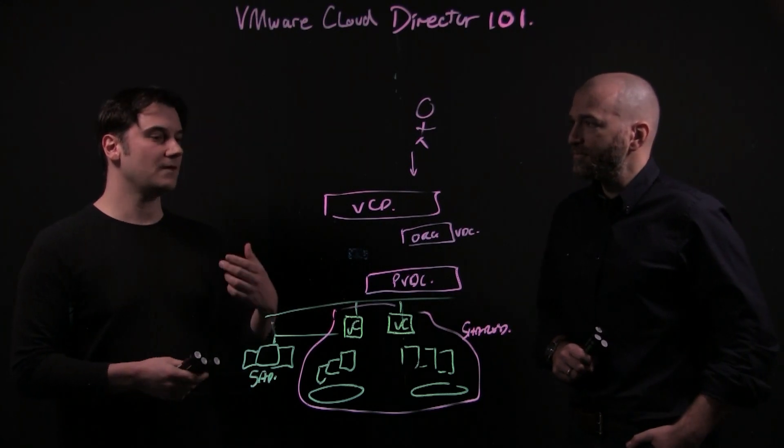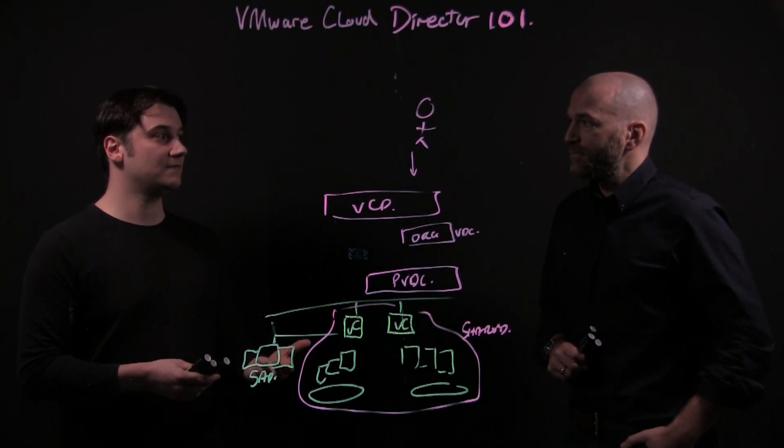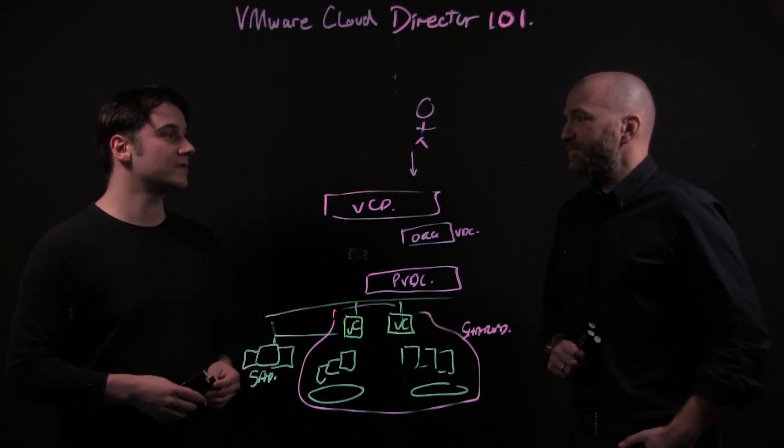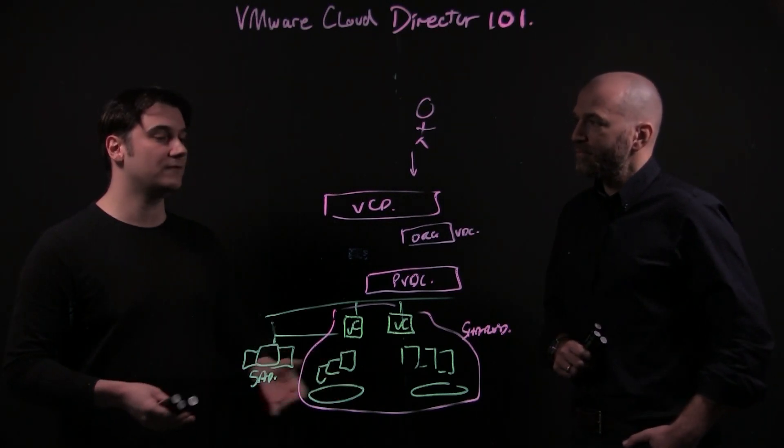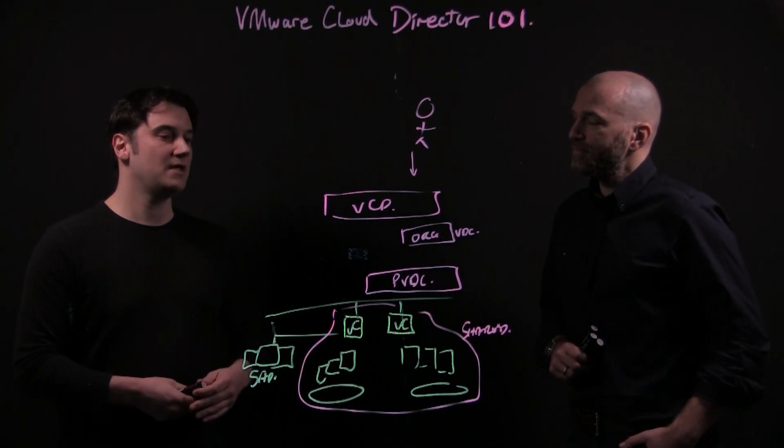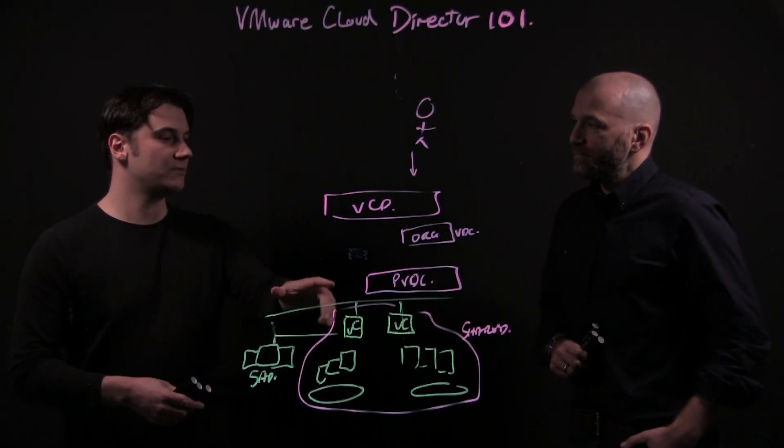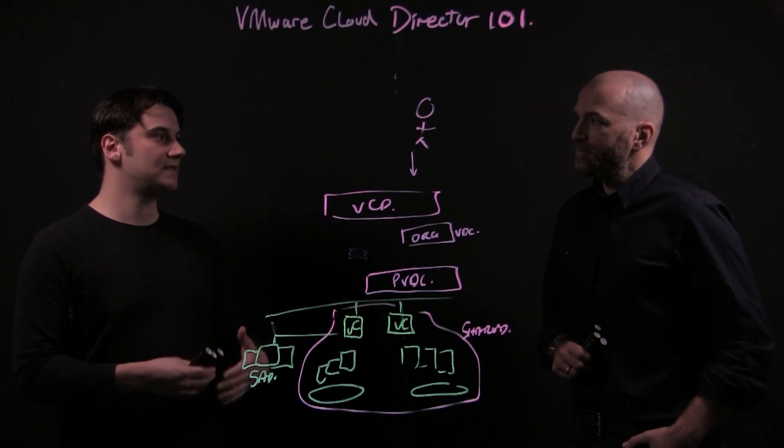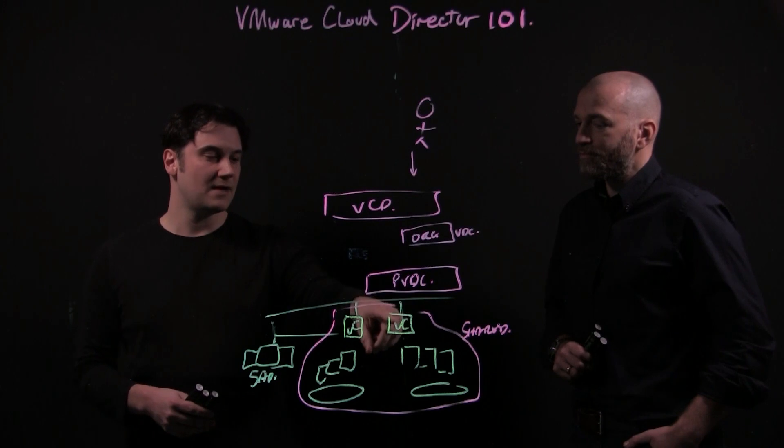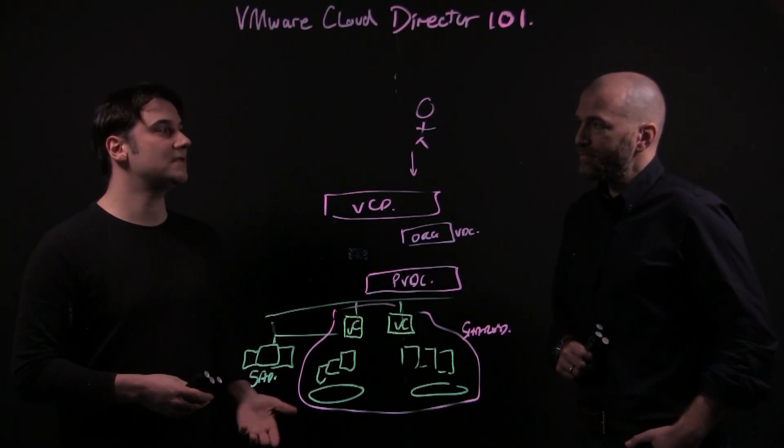So what is a provider VDC? That is a declaration effectively to vCloud Director of an underlying vCenter to say, here are some resources, here's my infrastructure, my platform. I want you to further carve this up and offer it to customers. They're not consumable by customers when you get to the provider layer. All you've done is declare to vCloud Director the infrastructure. So a PVDC is a mapping to a vCenter.